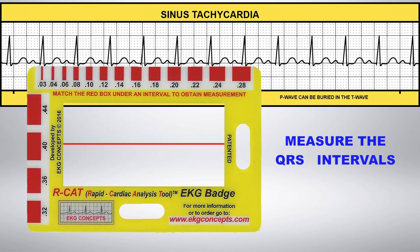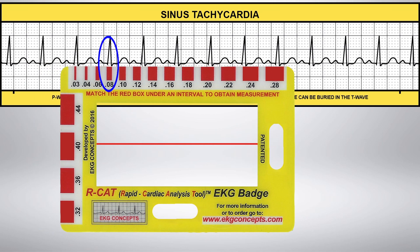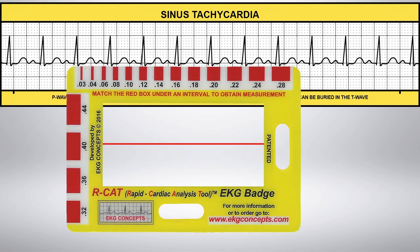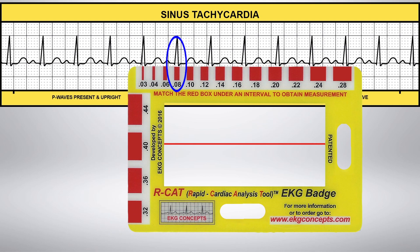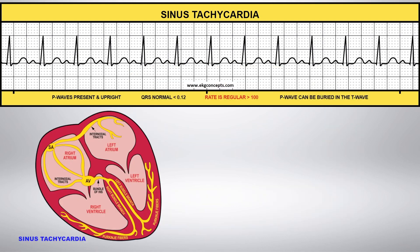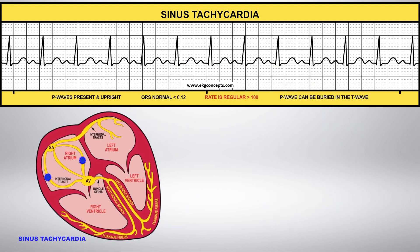Now using the calibrated red boxes, slide the badge over to measure the QRS intervals. The QRS intervals are consistently 0.08, which is in the normal range of less than 0.12.